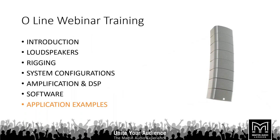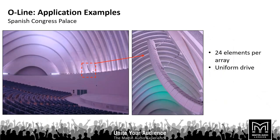Let's have a quick look at some application examples. The first is the Spanish Congress Palace. As you can imagine from the photos, this congress room doesn't have the best room acoustics, but deploying two arrays of O-Line has made hearing the conference content really easy, with everybody getting that nice intelligibility you'd expect from any conference.